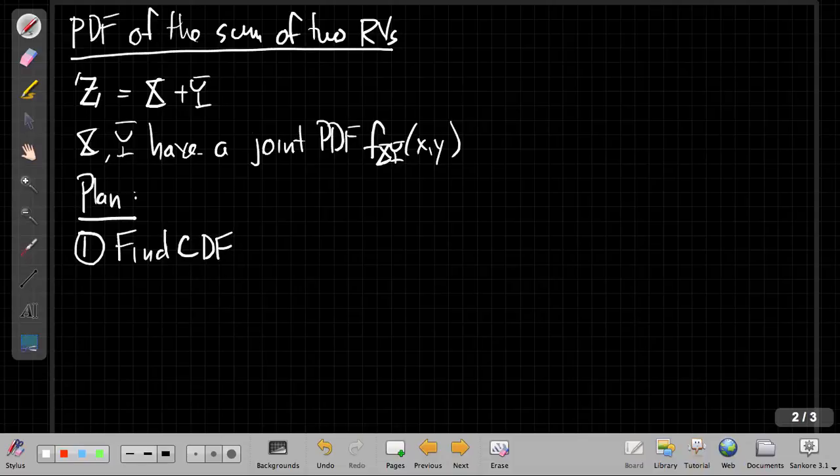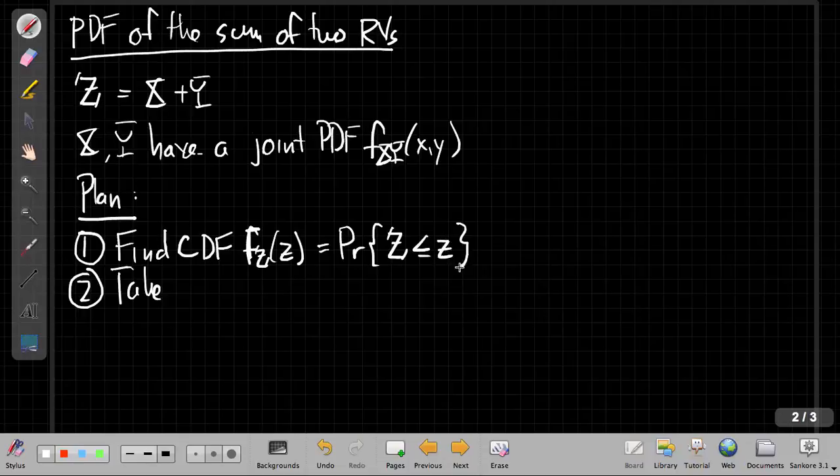If I'm not really sure how to proceed, find the CDF first because that's a well-defined event, and then take the derivative. So we're going to find the CDF for Z, capital F_Z(z), which by definition is the probability that Z is less than or equal to some outcome little z, and then take the derivative with respect to z.